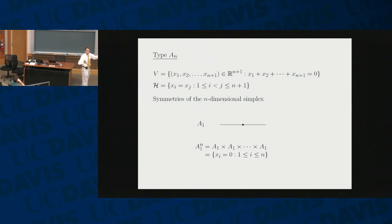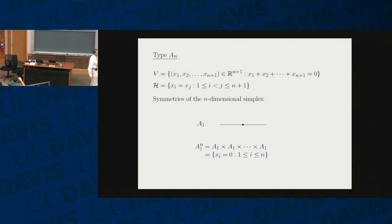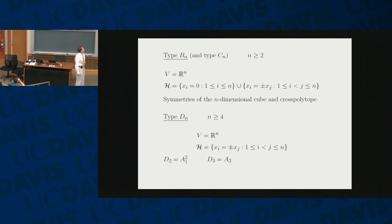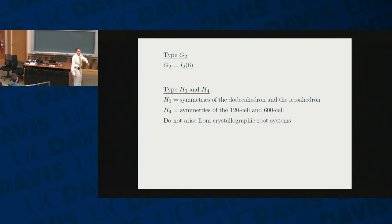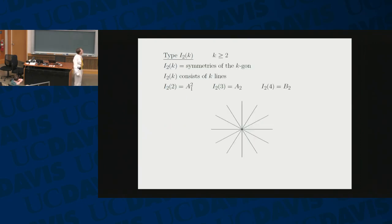Here's type AN, which encodes the symmetry of the simplex. A1 is the simplest: a one-dimensional space where the hyperplane is the origin. The arrangement that will play a role for us is A1 to the N, the arrangement of the coordinate hyperplanes. Then we have type BN and CN — for me they are the same thing — the symmetries of the cube. We have type DN, type E6, E7, and E8. We have type F4, which is my favorite. Then type G I'm going to skip. We have type H3 and H4, and then we have the dihedral arrangement: the two-dimensional arrangements with k lines.